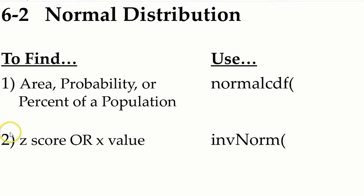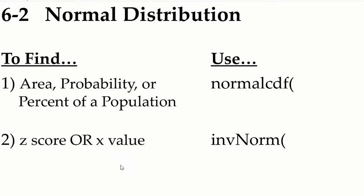The other question you're going to be asked is to find a Z-score or an X-value. X-values are just the variable we're dealing with — in the previous example, the X-variable was men's height. Anytime you're asked to find an X-variable or X-value, you're going to be using the function inverse norm. Let's go ahead and jump right into a problem.